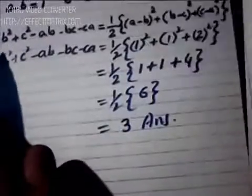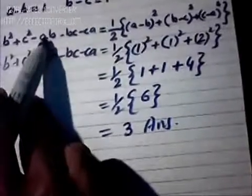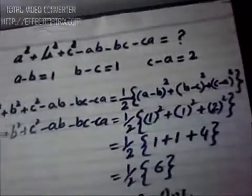And 6 divided by 2 equals 3. So we have found the value: a² + b² + c² - ab - bc - ca equals 3.